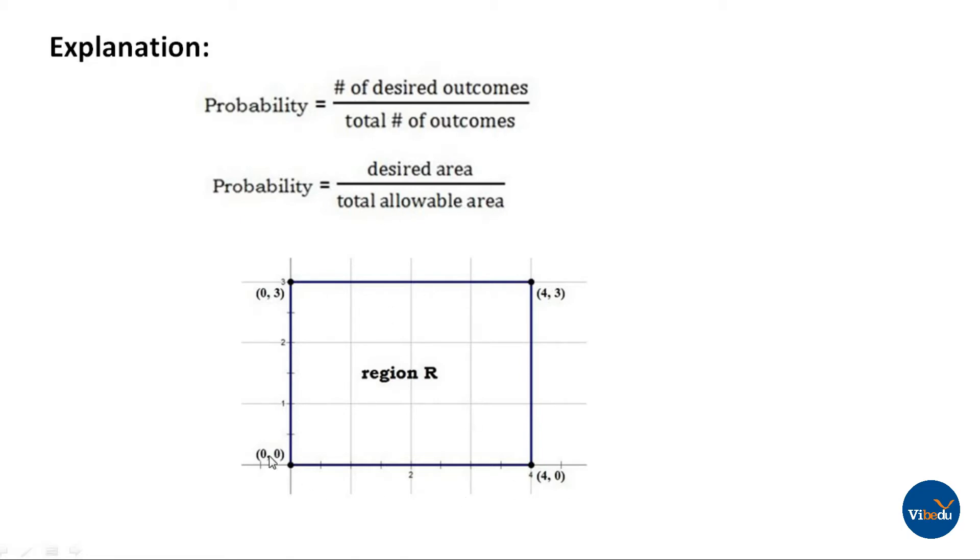In the xy plane, the first point (0,0) is the origin, second is (0,3), then (4,3) and (4,0). This is the rectangular area with area 4×3=12.